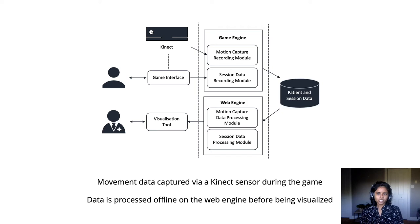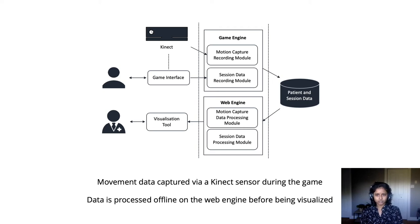How this system works is that we have a game interface. While users play this game, movement data is captured by the Microsoft Kinect sensor, which is an infrared motion capture device. The movement data, along with some other game data such as a score, is captured and stored. This data is then processed offline in the web engine before being presented on this front-end web tool I'm presenting today.